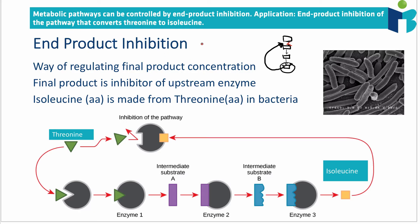That's all end product inhibition is. It's useful because it's a way of regulating the level of our final product. As you can imagine, if we draw a graph with concentration of the final product on the y-axis and time on the x-axis — as the concentration goes up, that causes increased inhibition, meaning less formation, so the level goes down again. Then as the level goes down, there's less inhibition, so the level increases again. It's a way of maintaining relatively constant levels of these substrates.